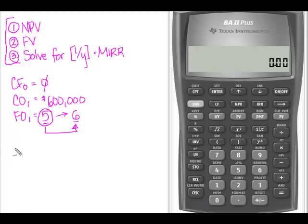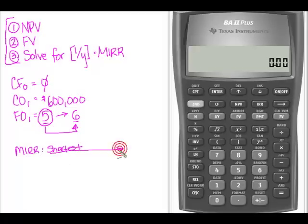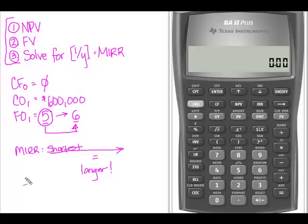Remember, when we do the modified internal rate of return, we're simply going to take the shortest project and stretch it out to equal the longer of the two projects. It's very similar to doing it the other way, except I've got to take the short one and make it equal the long one. Remember that the longer of your two projects doesn't need to be calculated for the unequal lives adjustment.